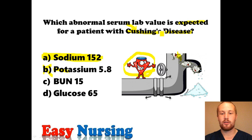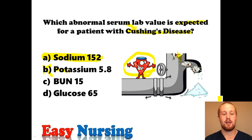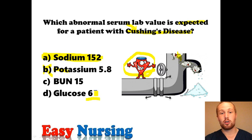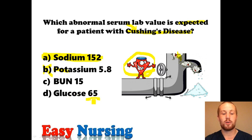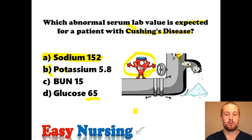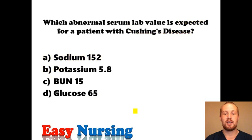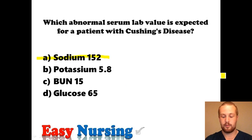A low glucose won't be seen in Cushing's. With Cushing's, you have high stress hormones, high cortisol, and with stress your blood sugars rise. A glucose of 65 would be considered slightly on the low end, so this would not be expected with Cushing's. You would expect a low blood sugar when you have low stress levels, such as in Addison's disease. To recap, Cushing's disease has high levels of aldosterone, which holds on to sodium.